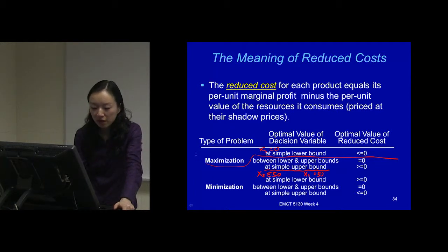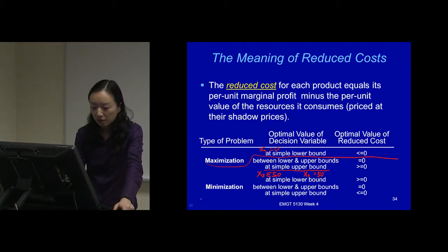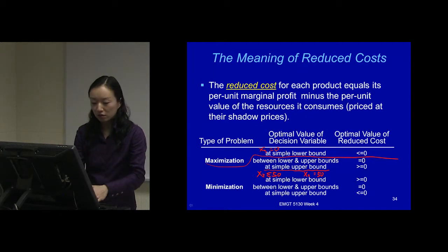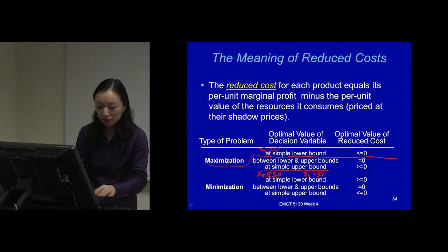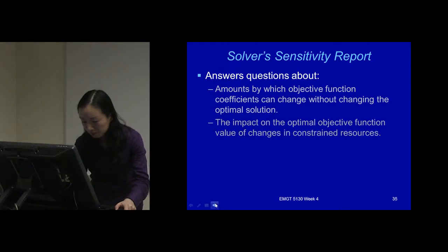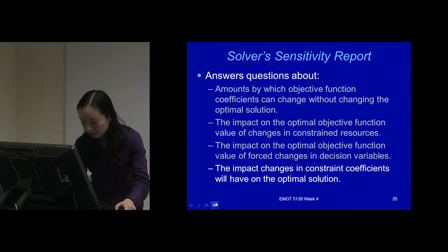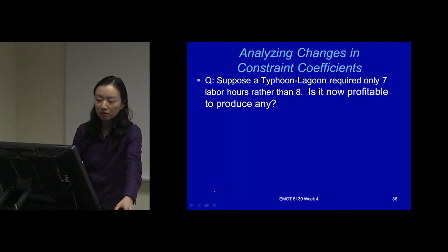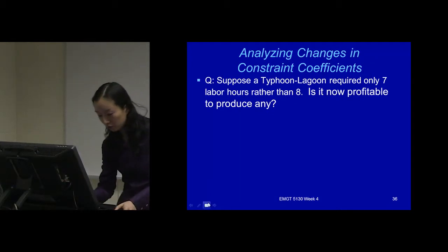When you go home, please take a look at this table. If you are taking it online, pause here and make sense of those things — it helps you understand reduced cost, the impact on the objective function, the simple lower bound, and simple upper bound. Now, suppose this Typhoon Lagoon now requires only seven hours of labor rather than eight. Is it now profitable to produce any?